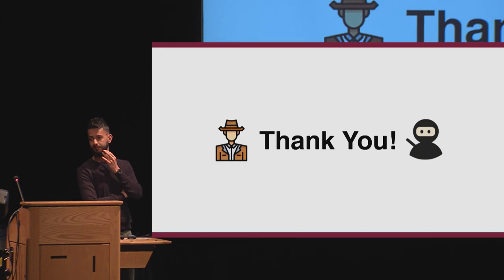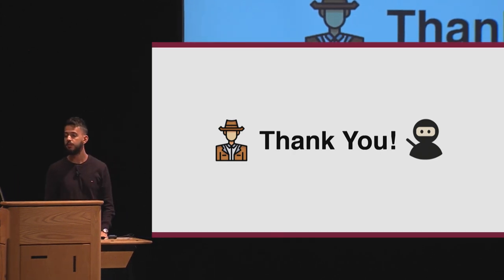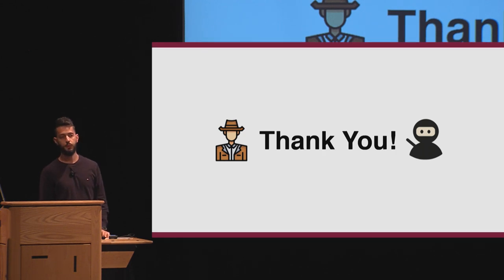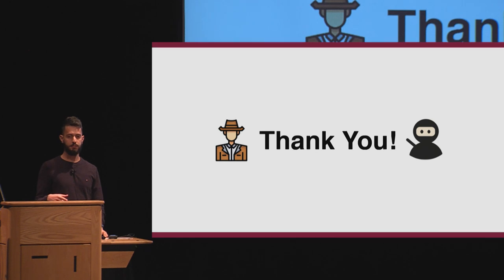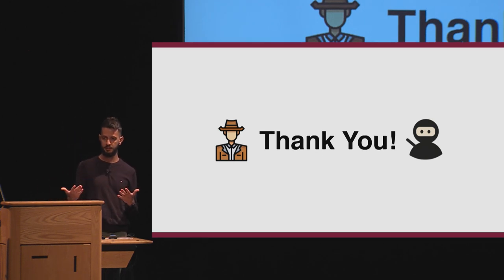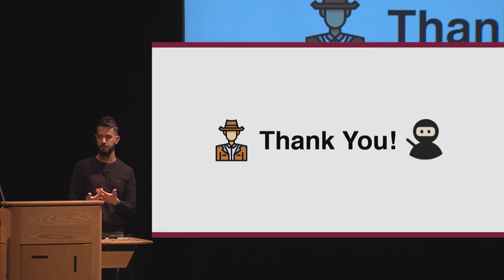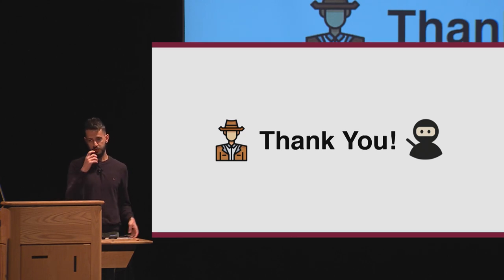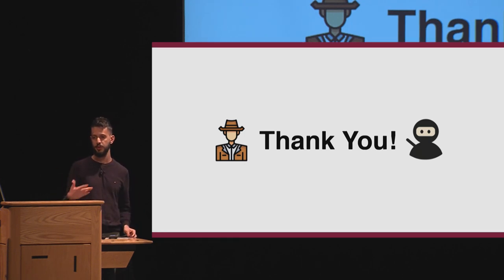Question: Can predicate encryption be sufficient instead of functional encryption? It seems you only need security in the case where things don't decrypt, which is usually much easier. Answer: The problem is that we need two policies, so we would need two predicate encryption schemes. The problem is how to match these two schemes — if you use a naive way like combining attribute-based encryption schemes, you don't have match security. You need a wrapper around the two schemes that doesn't leak any information about the predicate, so I don't think predicate encryption alone is sufficient.